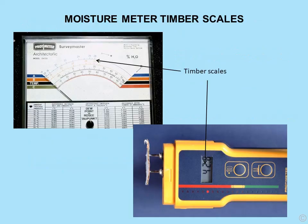Moisture meter timber scales: on the left is a very old meter with two scales — softwood and hardwood. Note also that it is not calibrated beyond 28%, i.e. it is not calibrated beyond the fibre saturation point.